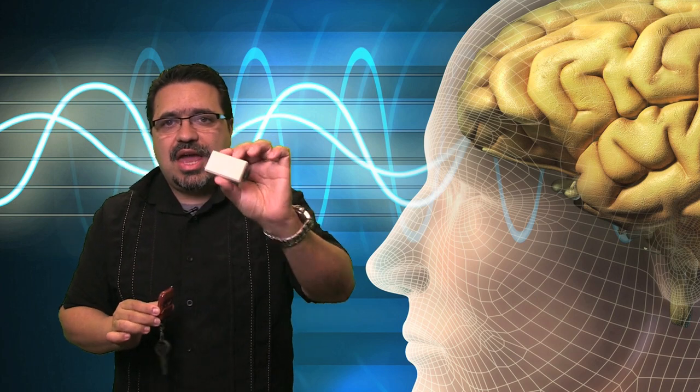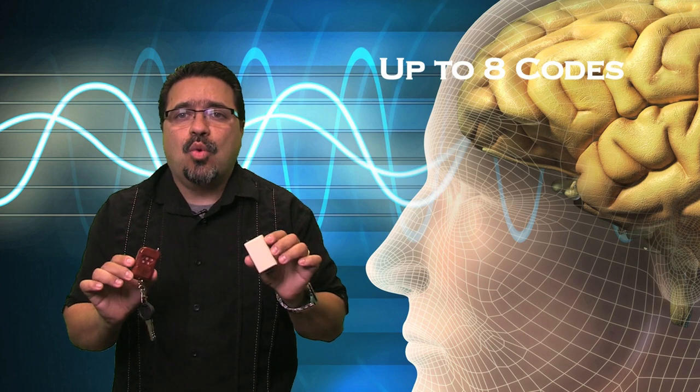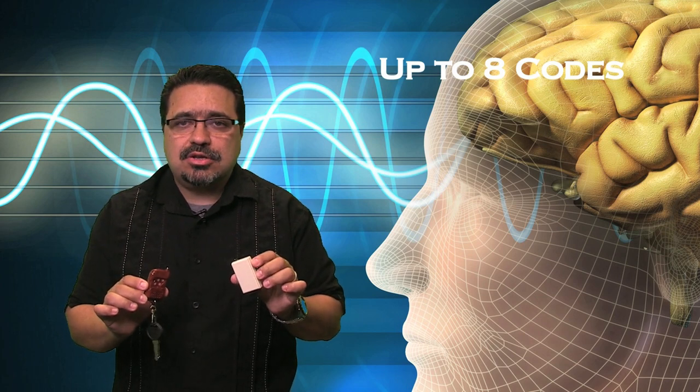The transmitter has four different buttons. These buttons, used in combination, can send up to eight different codes to this tiny matchbox size receiver. This opens up a wide range of possibilities and uses.